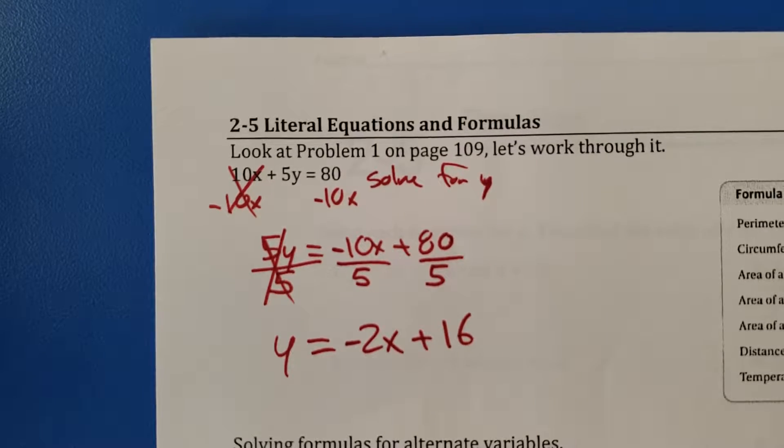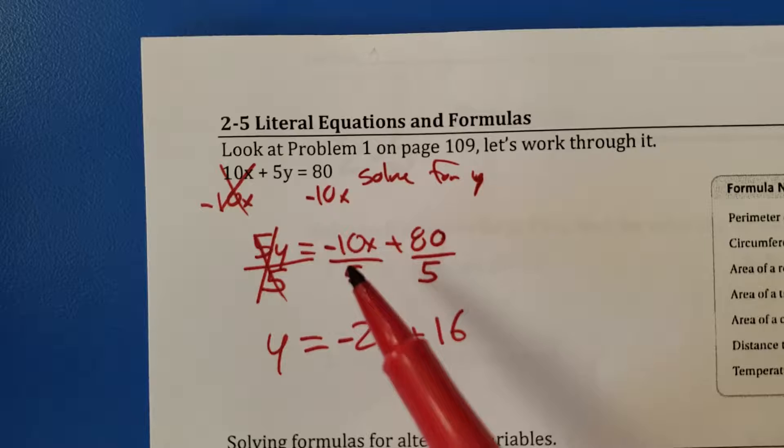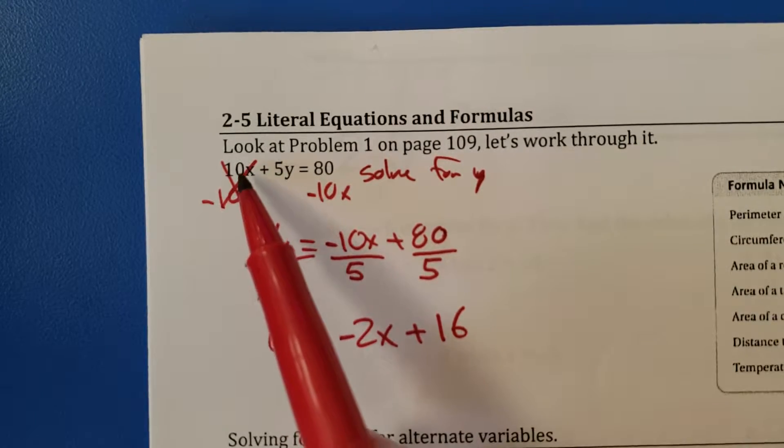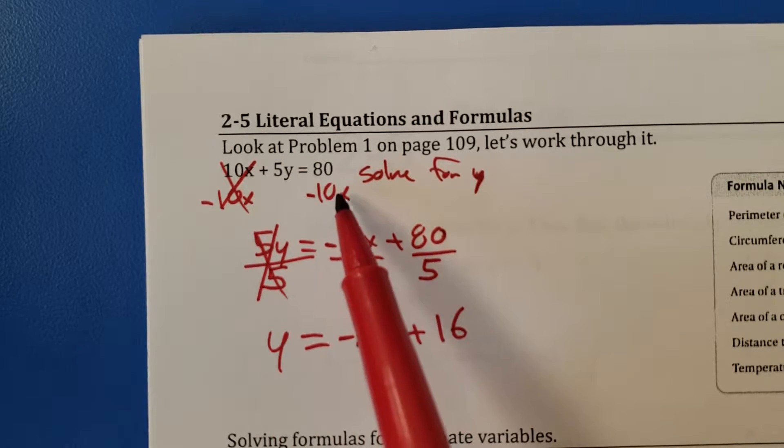Okay. So again, all I'm doing is my solving skills. I'm getting rid of the weakest connection first, this positive 10x, subtracting 10x.